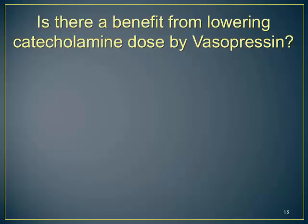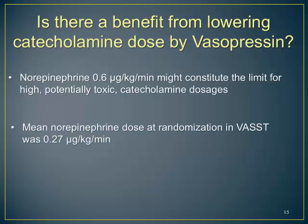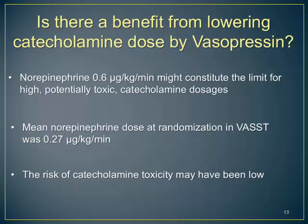Another proposed benefit of vasopressin is lowering the catecholamine dose. From multiple sources, the catecholamine dose beyond which significant side effects and toxicity occur is 0.6 mcg/kg/min. However, in the VAS trial, the mean dose at randomization was only 0.27 mcg/kg/min, and we're not certain that further lowering of this dose would provide meaningful reduction in catecholamine-related side effects.